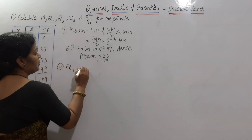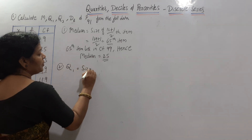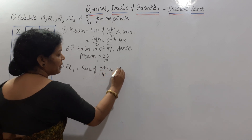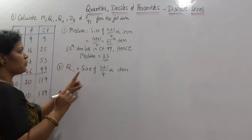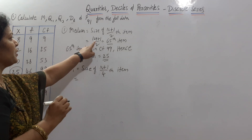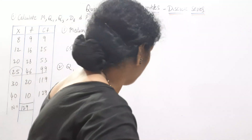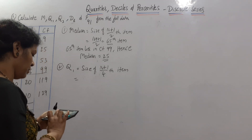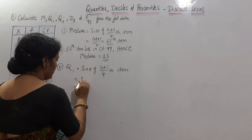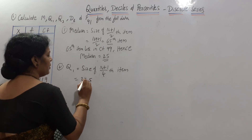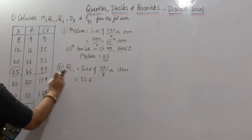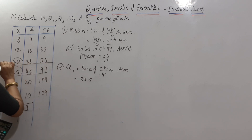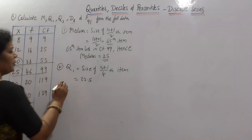Next, Q1. The formula for Q1 is: size of (N+1)/4 th item — same as in individual series. N is 129, so (129+1)/4 = 130/4 = 32.5. The 32.5th item lies in CF 53.